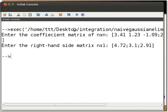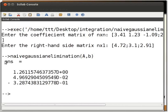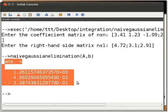Press Enter. Then we call the function by typing naive Gaussian elimination open parenthesis A, B close parenthesis. Press Enter. The solution to the system of linear equations is shown on Scilab console.